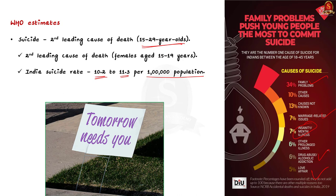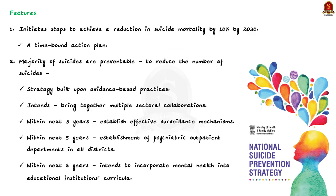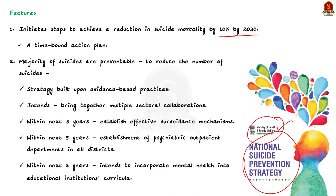The best first step towards addressing a malaise is to recognize that it exists. The publication of the National Suicide Prevention Strategy by the Ministry of Health and Family Welfare is a right move in the right direction. The strategy initiates steps to achieve a 10% reduction in suicide mortality by 2030, and the Ministry has created a time-bound action plan after considering the changing reality of varying ground situations.